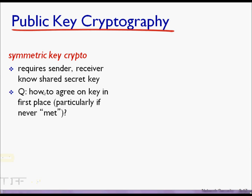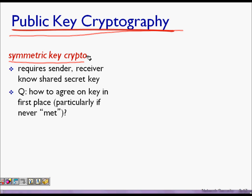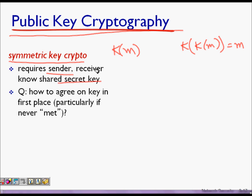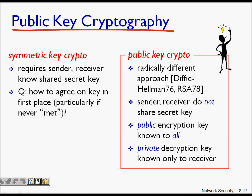In this lecture we are going to learn about public key cryptography. Till now we have learned about symmetric key cryptography, where if we have a message m we encrypt it with the same key, and at the receiver end he also decrypts it with the same key. So the sender and receiver should agree on a shared secret key. The problem is how to agree on a key in the first place, particularly if we have never met.